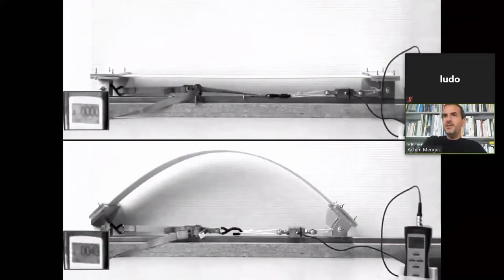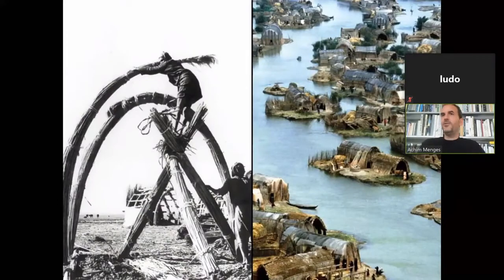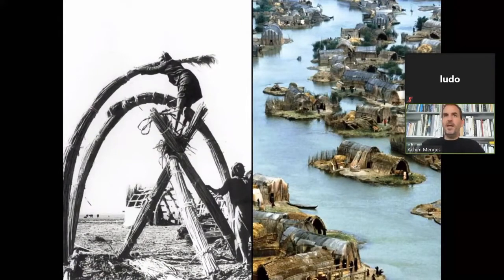It's interesting to know that even this very simple shape was actually difficult to integrate in a design process primarily based on geometric notation until very recently. This is why we have hardly ever really used the elastic behavior of building elements, except for, for example, vernacular architecture — here you see the houses that the Madan people in southern Iraq used to build from elastically bent reed bundles.